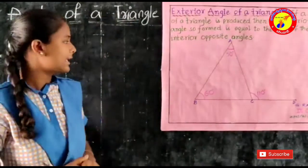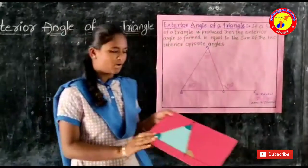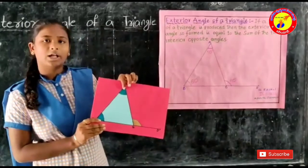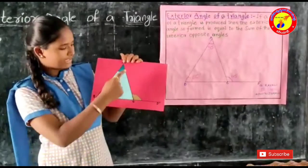Now I am going to prove that angle A and angle B equal to angle ACD with a small example. Here angle A is 50 degrees and angle B equal to 60. Now I am going to place angle A and angle B in the place of angle ACD.